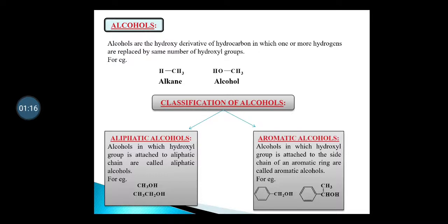Aliphatic alcohols are the alcohols in which the hydroxyl group is attached to an aliphatic chain. What does aliphatic chain mean? Aliphatic chain means an open alkyl chain. An open alkyl chain can be saturated, unsaturated, branched or linear. If you have a hydroxyl group attached to an aliphatic chain, we call it aliphatic alcohol. Here we have examples of methyl alcohol and ethyl alcohol.